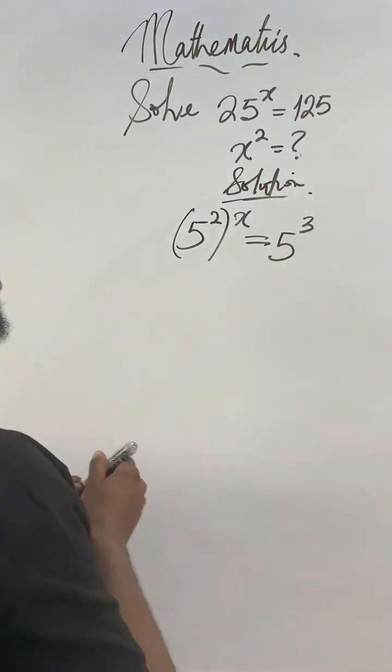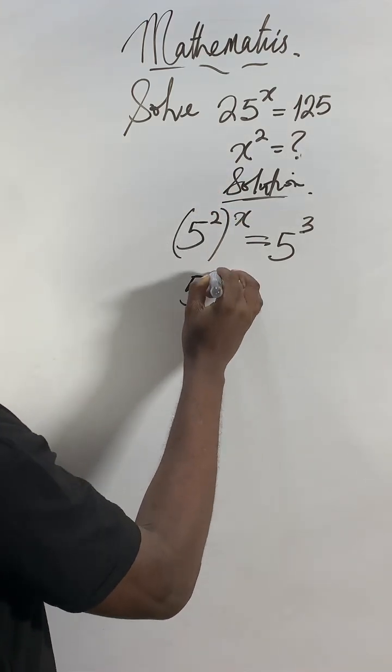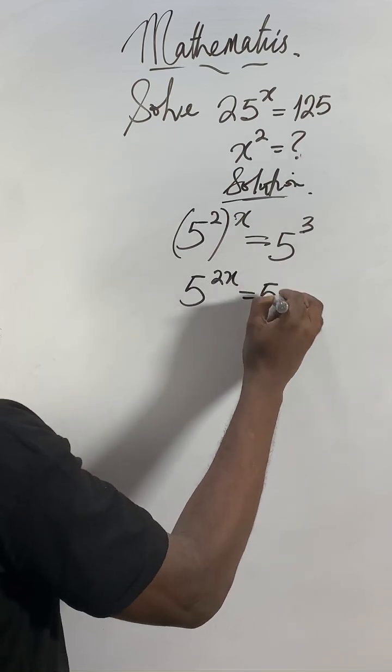Now 2 times, forget about this one first, 2 times x will give you 2x. So 2x will be equal to 5 to the power of 3.